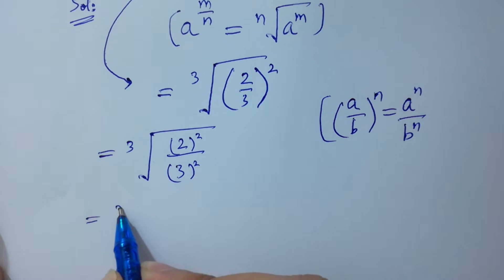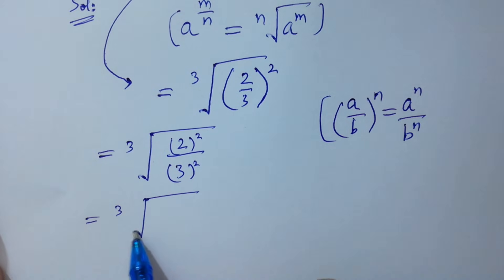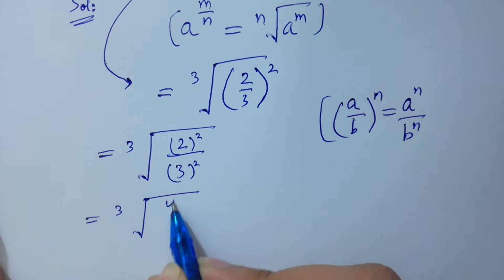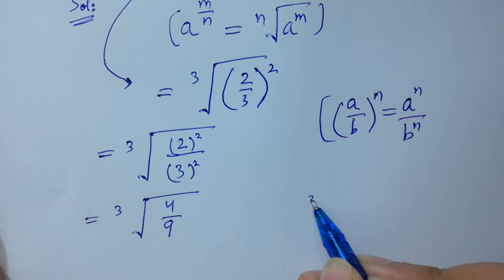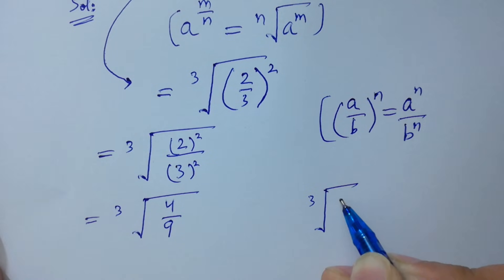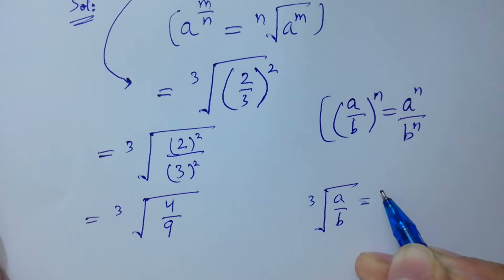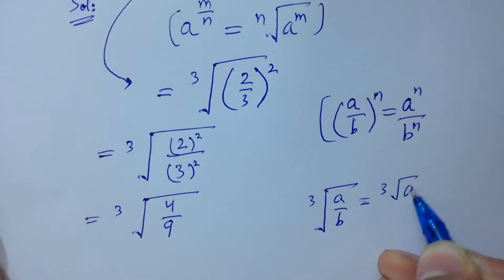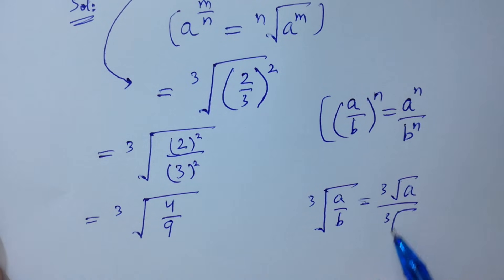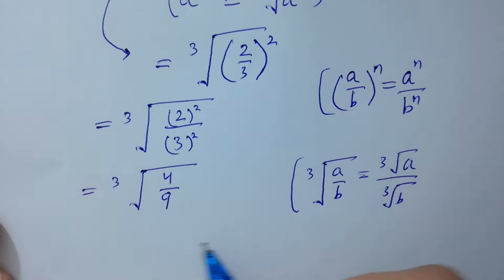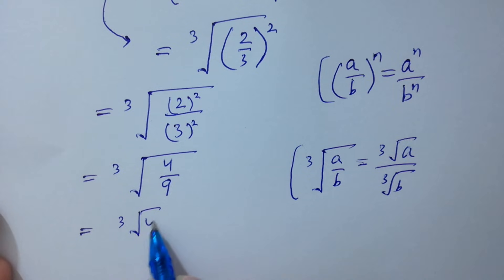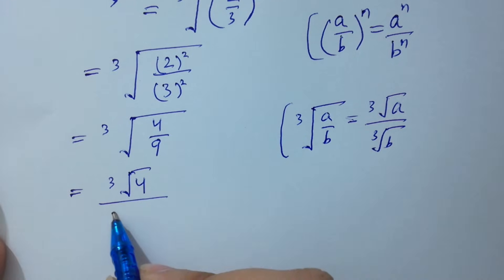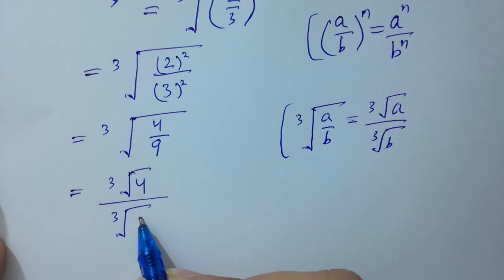Cube root of 2 squared — 2 squared is 4, and 3 squared is 9. Since cube root of (a over b) equals cube root of a over cube root of b, so we have cube root 4 over cube root 9.